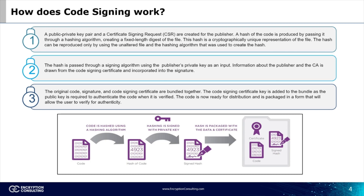How does code signing work? A public-private key pair and certificate signing request are created for the publisher. A hash of the code is produced by passing it through a hashing algorithm, creating a fixed-length digest of the file. The hash is a cryptographically unique representation of the file and can be reproduced only by using the unaltered file and the hashing algorithm that was used to create the hash.